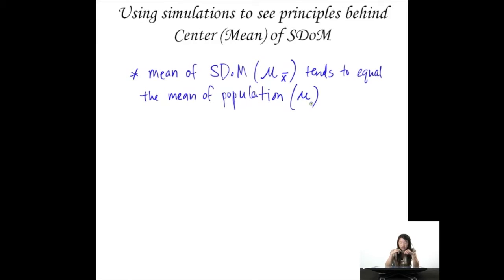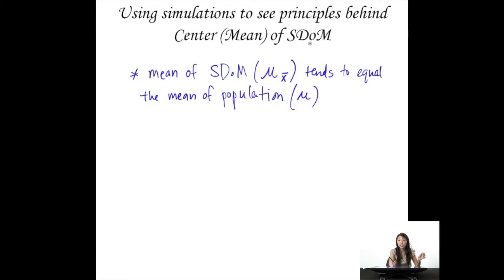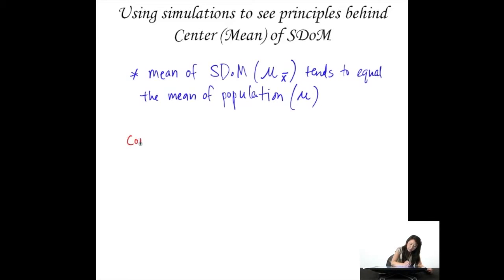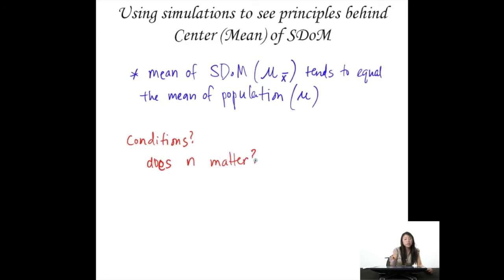Notice that this is using mu because the SDOM and all sampling distributions are theoretical distributions, and theoretical distributions tend to be notated just like populations. Does it have to be that way — are there any conditions? Does n matter? Let's test this: we want to know if the size of our sample matters.